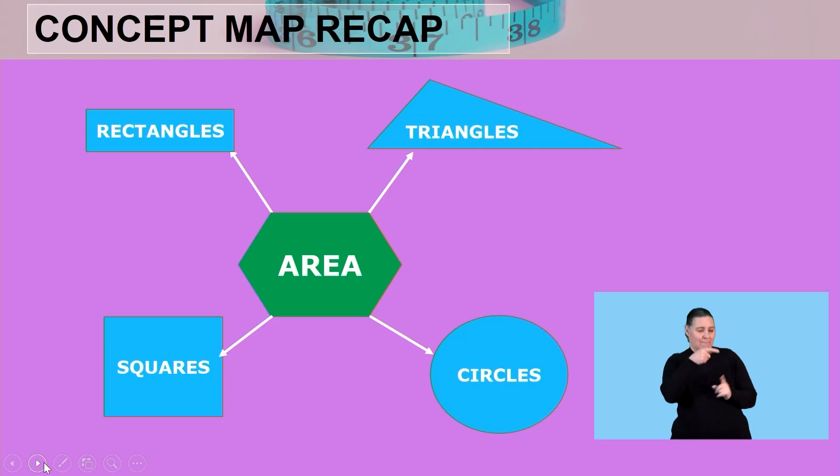So if I look at it, that was the concept map we started off with. We started off with the square, went to the rectangle, went to the triangle, finally we found the area of circles. Nice work.